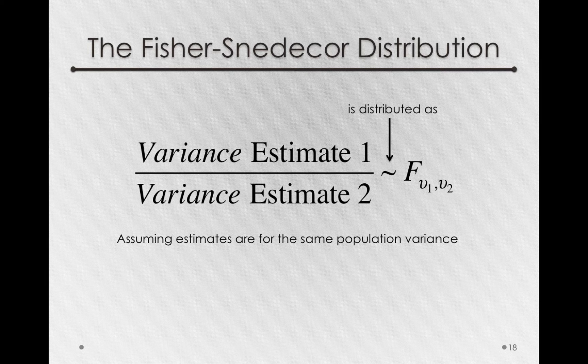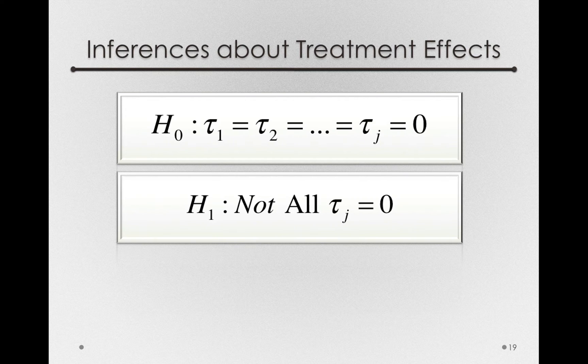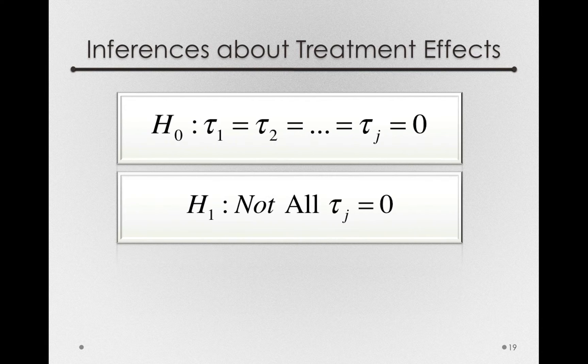So why should we care? Well, let's remember what we were trying to do. We were trying to make an inference about whether a factor mattered in the population. That is, we're trying to determine whether all those treatment offsets are actually equal to zero.